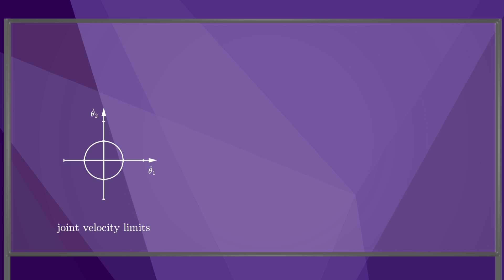This maps through the Jacobian to produce an ellipse, or more generally an ellipsoid of possible tip velocities. This ellipsoid shows that the robot can move fast up and to the left, but only slowly up and to the right.